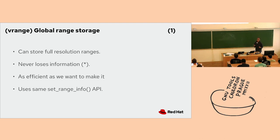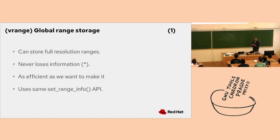Streaming out full-resolution ranges is a performance problem for things with a lot of SSA names — LTO of Firefox, for example, has a lot of SSA names, and attaching a full range to each one is a performance penalty. So what we did was squish down the range to its minimum representation — the minimum number of sub-ranges — and stream that out. In our tests we found that anything past three sub-ranges is probably overkill for anything apart from a switch. Right now we're streaming at most five pairs, but we can bring that down to three or four.